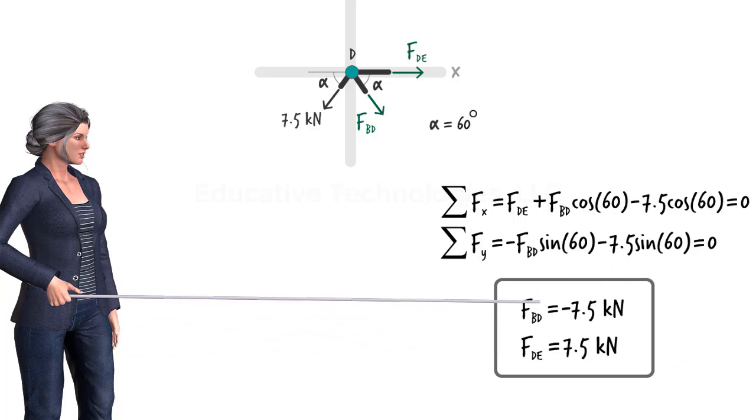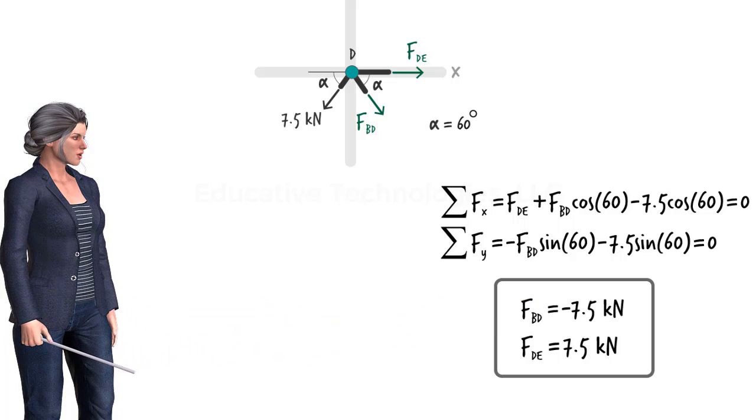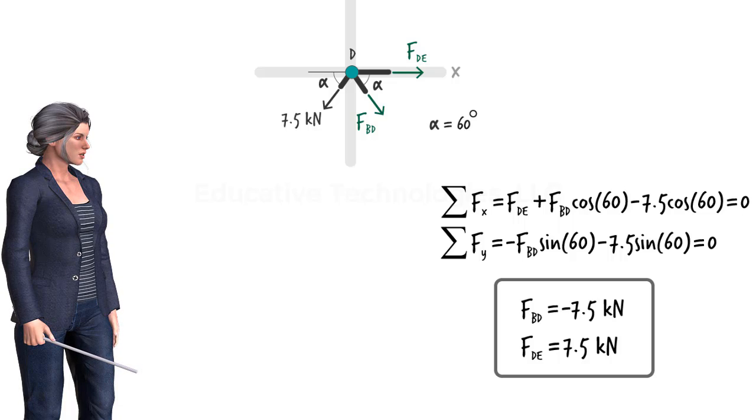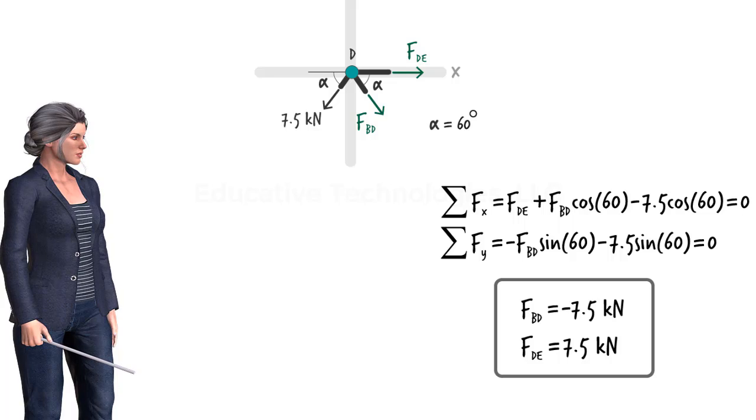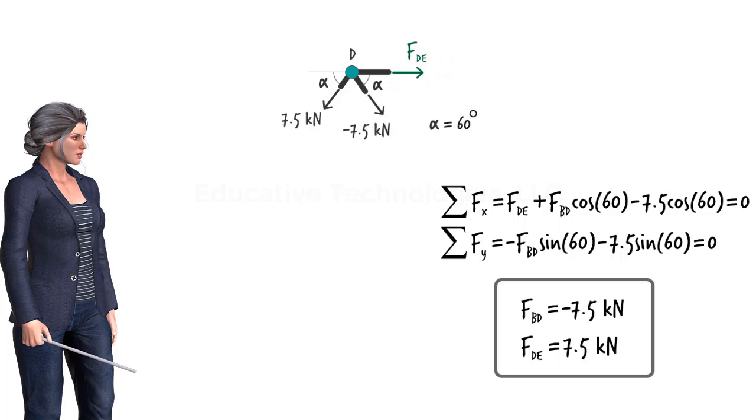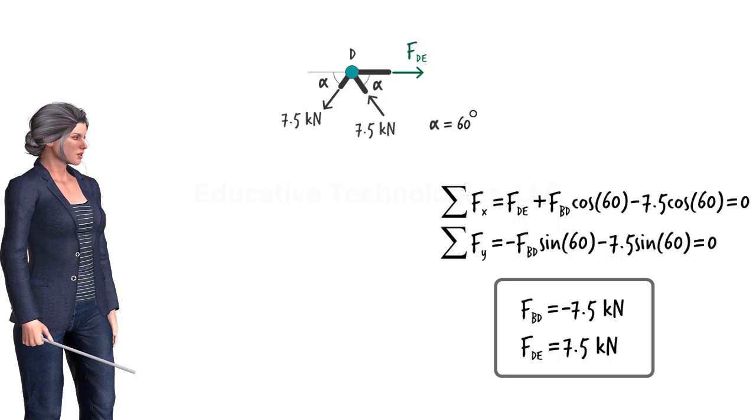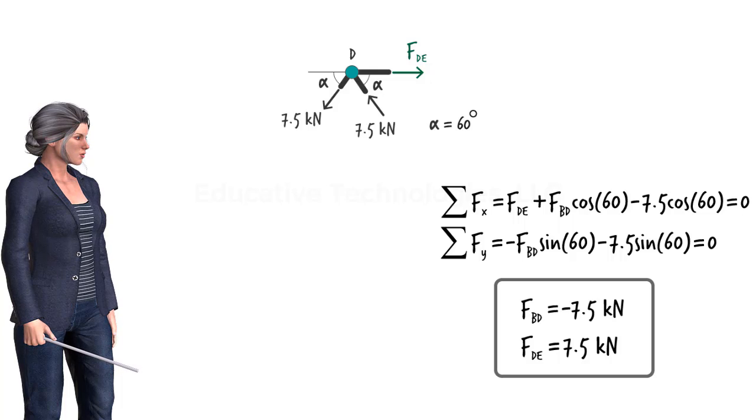What does the negative sign for FBD mean? It means the direction of the force is opposite to what was assumed initially. We assumed all the truss members were in tension. The negative sign tells us that member BD is in compression. Therefore, we can either keep the direction of the force arrow as is and write negative 7.5 kilonewtons next to it, or we can reverse the direction of the arrow and write positive 7.5 kilonewtons. Either way, we are stating that the member is carrying a compressive force of 7.5 kilonewtons.